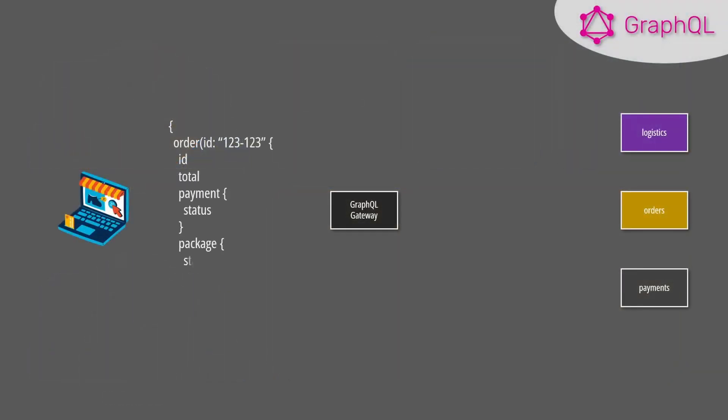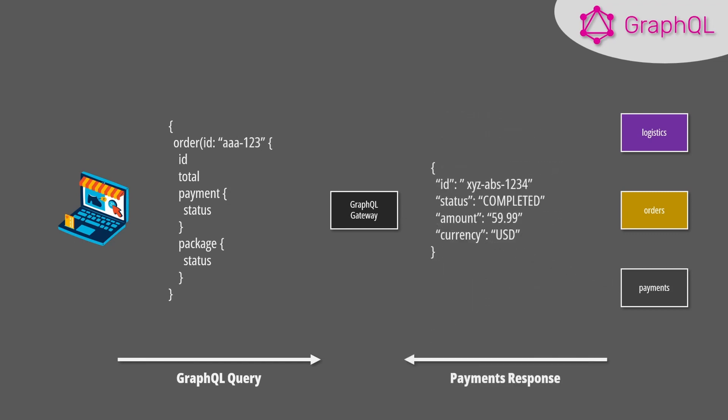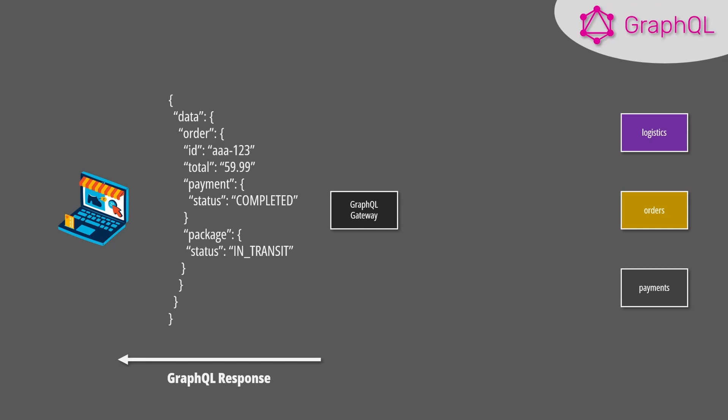GraphQL, on the other hand, solves this issue since our aggregation is dynamic and query-driven. However, we pay the cost in implementation time since we need to code a microservice capable of resolving GraphQL queries. Other than leveraging an API gateway or a query language, you could develop an aggregation microservice in whatever language you like.